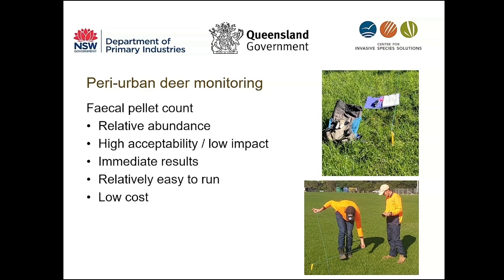Faecal pellet counts are an ideal method for periurban areas because they have very low impact and high acceptability, meaning you can use this method in almost any habitat, even private gardens. It only requires a little equipment — a piece of string, two pegs, and a GPS, as you can see on the right picture. This is everything you need to do the monitoring, which means this method is pretty cheap and relatively easy to run. Involving local collaborators like Water NSW can also reduce the cost of the monitoring.